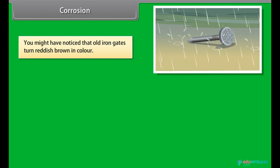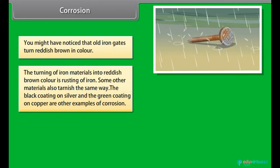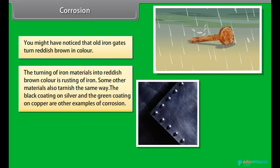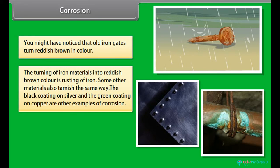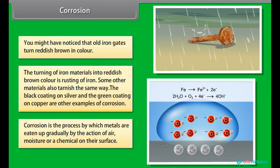Corrosion: You might have noticed that old iron gates turn reddish brown in color. The turning of iron materials into reddish brown color is rusting of iron. Some other materials also tarnish the same way. The black coating on silver and the green coating on copper are other examples of corrosion. Corrosion is the process by which metals are eaten up gradually by the action of air, moisture or a chemical on their surface.